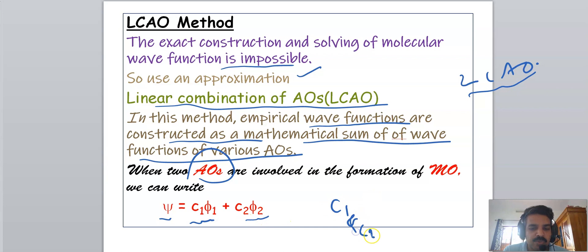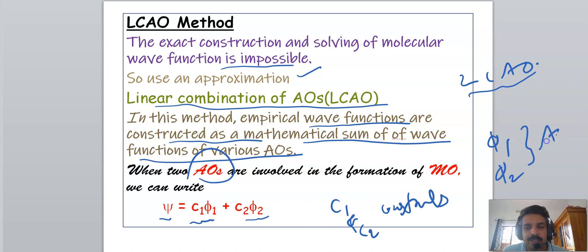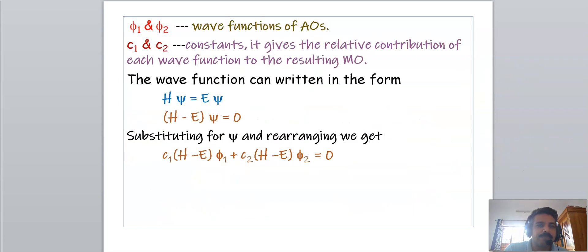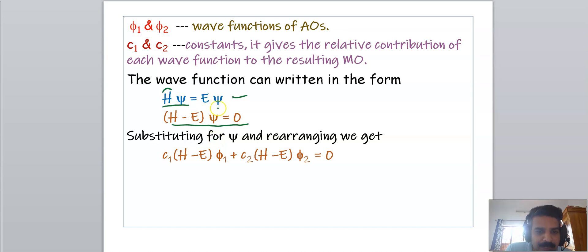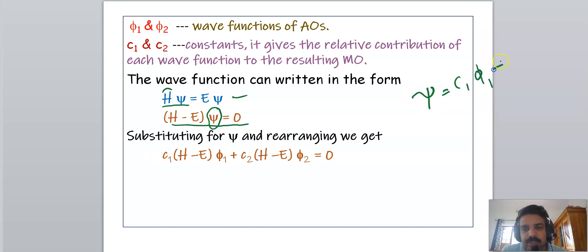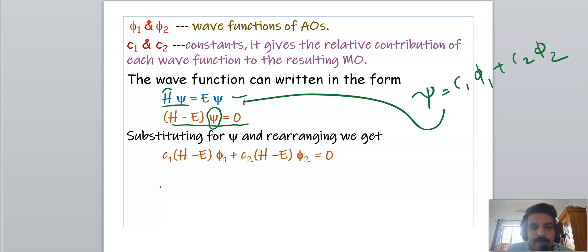Here c₁ and c₂ are constants, and φ₁ and φ₂ are the two atomic orbitals. The Schrödinger equation Ĥψ = Eψ can be rearranged as (Ĥ − E)ψ = 0. Substituting the LCAO expression for ψ, we get: c₁(Ĥ − E)φ₁ + c₂(Ĥ − E)φ₂ = 0.